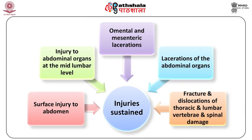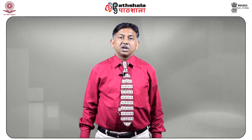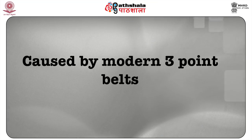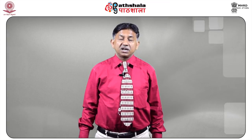Further seatbelt syndrome injuries include injury to abdominal organs at the mid-lumbar level, omental and mesenteric lacerations, lacerations of the abdominal organs, and fracture-dislocation of the thoracic and lumbar vertebrae causing spinal damage and paralysis. The most characteristic triad of injuries associated with rapid deceleration against a fixed fulcrum is spinal trauma, seatbelt aorta, and bowel injuries. Modern three-point belts were developed to minimize seatbelt syndrome, but the diagonal strap introduced new injuries: hyperflexion and hyperextension of the neck leading to fracture of cervical and upper thoracic vertebrae, carotid laceration, tracheal transection, injury to the brachial plexus, and accidental strangulation in children.